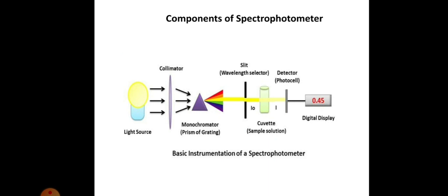The 480 nanometer radiation is allowed to pass into the sample solution where the iron solution is taken, and the transmitted light is detected. The detector converts the light energy into an electrical signal, so that either the absorbance value or the transmittance value is displayed on the display, depending on the mode selected.